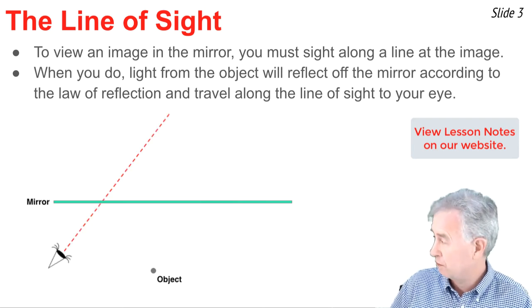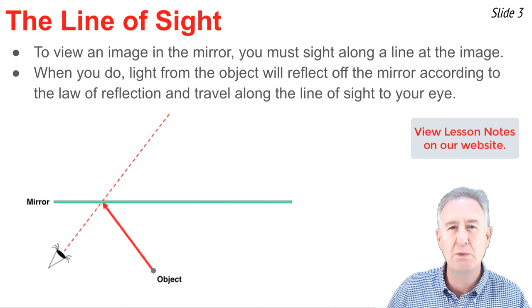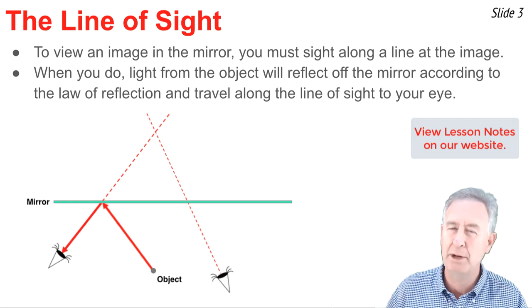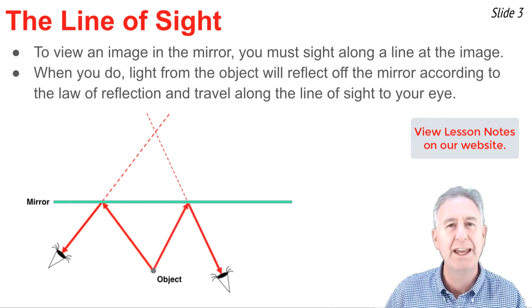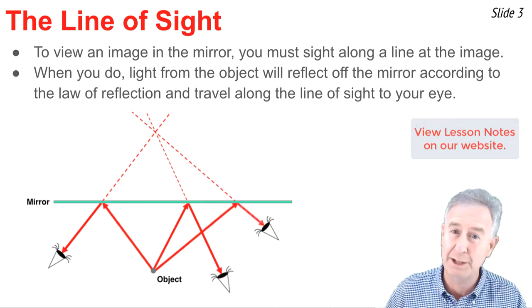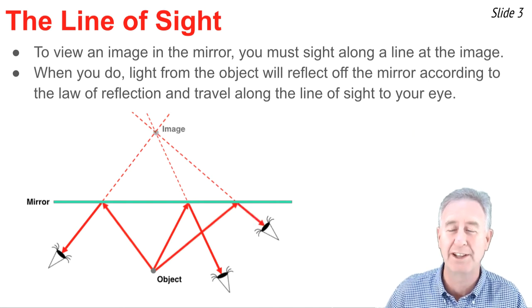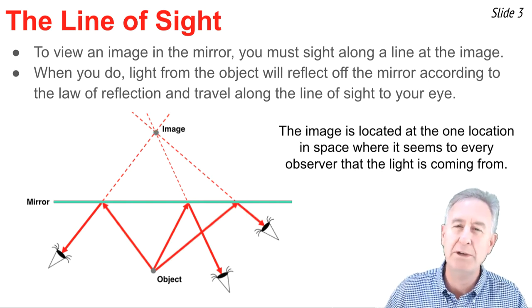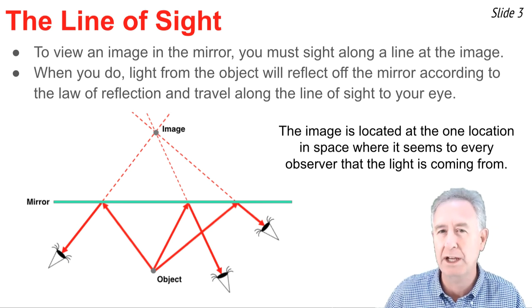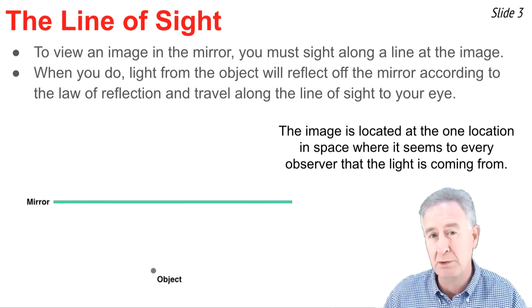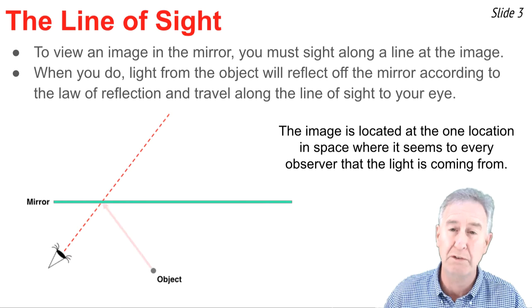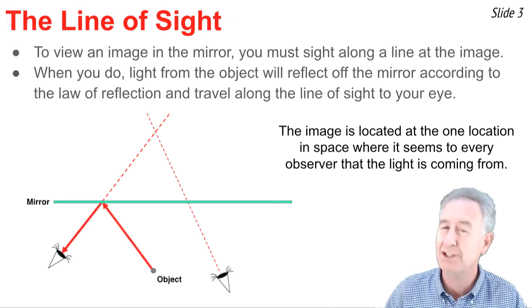For these three observers that you see in the diagram, each one is sighting along a different line but at the same image location, and each one will see the image because they're sighting along a line that intersects at that image location. What we know is that the image is located at the location in space where it would seem to all three of these observers, and any other observer, as though the reflected light is coming from.